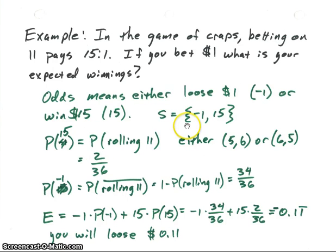Now, so let's suppose we're going to bet $1. What is your expected winnings, or what is the expected value that you think you're going to get from that bet? Now the odds means that we either lose that dollar that we bet, or minus 1, or we win $15, including the dollar that we bet, so we get $15. So we would have a positive 15. So our sample space is either minus 1 or 15.